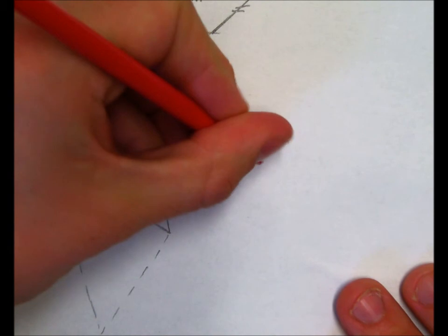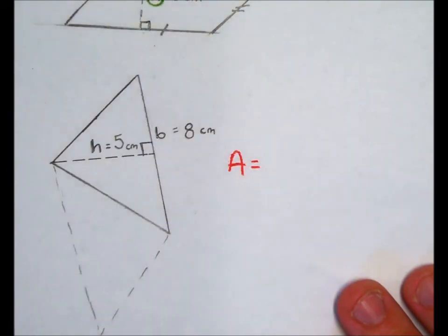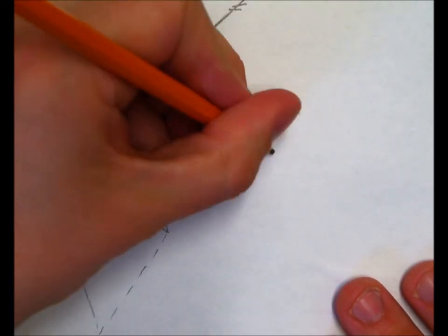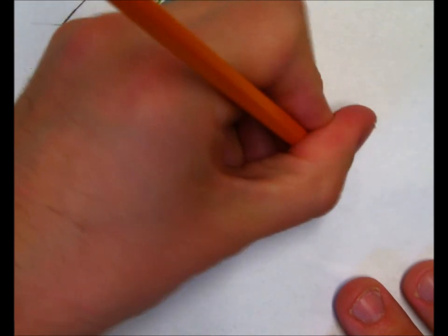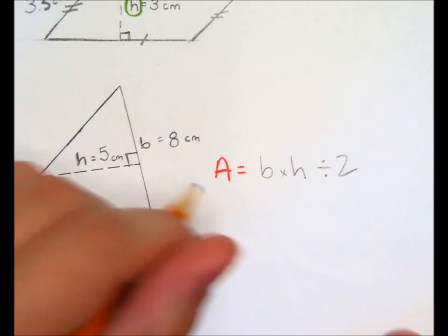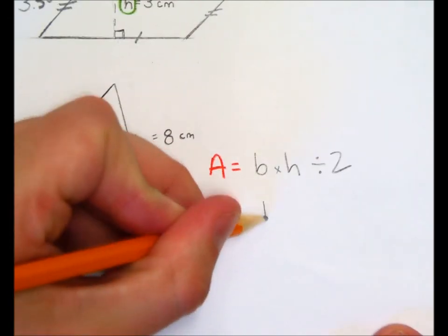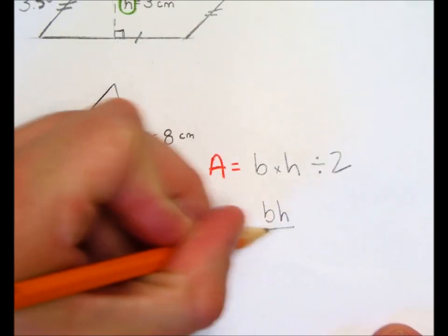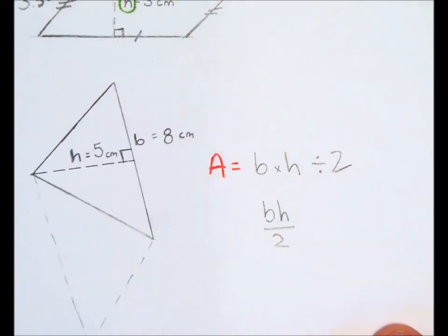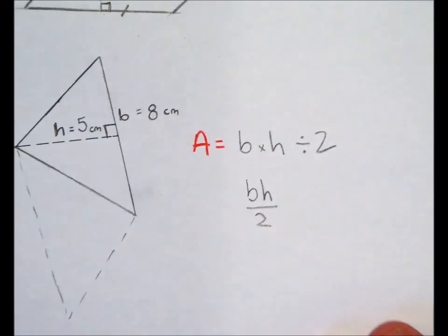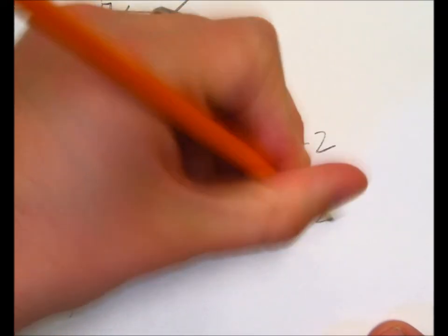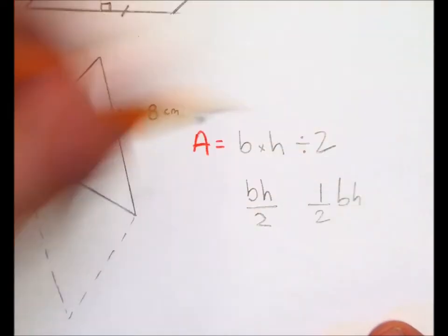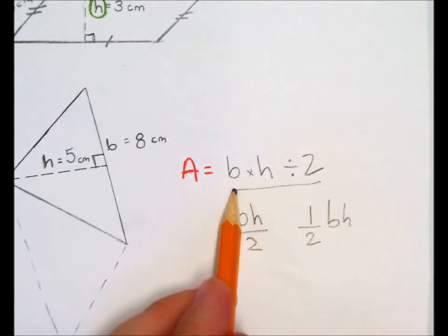So, again, we are looking for our area. An area of a triangle is equivalent to base times height divided by 2. You could also write that as base times height over 2. Or you could also indicate that as half of the base times height. But we'll just look at this one for now. Base times height divided by 2.